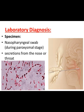95% of whooping cough cases are produced by Bordetella pertussis and occasionally by bronchiseptica. Household contacts are at risk; chronic carriers are not known. For laboratory diagnosis, the specimen is nasopharyngeal swab during the paroxysmal stage, or secretions from the nose or throat.